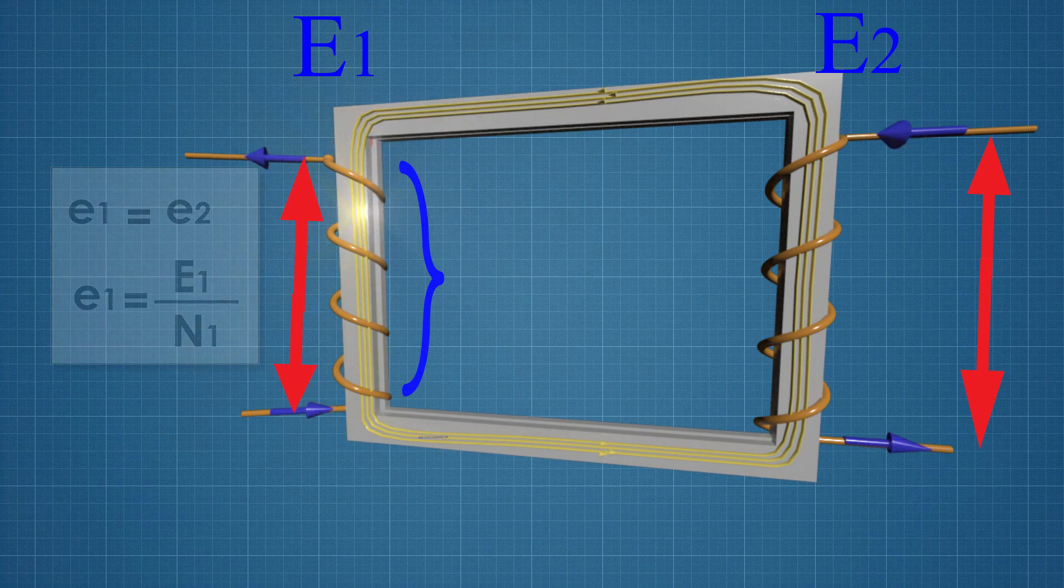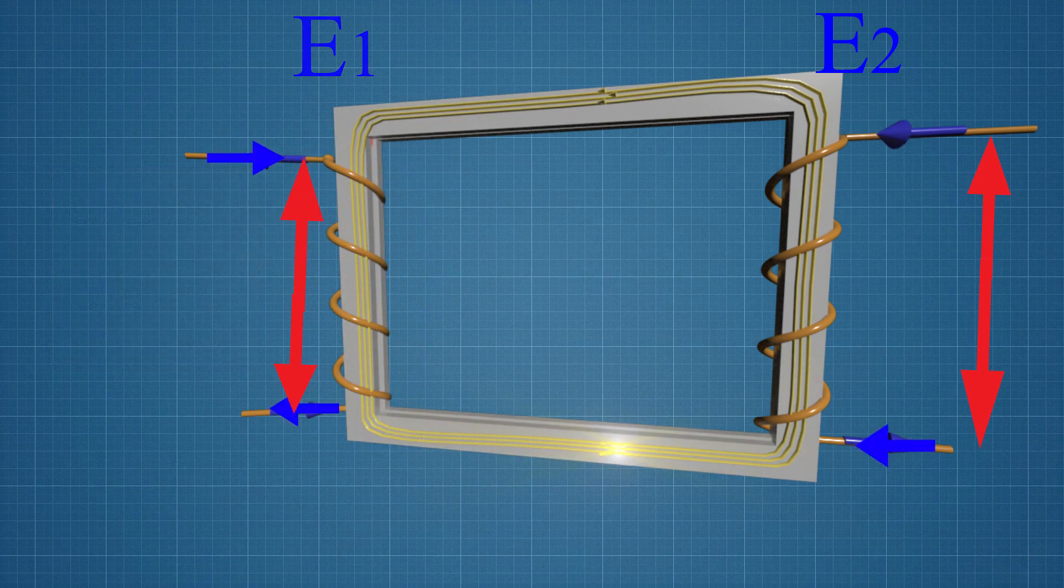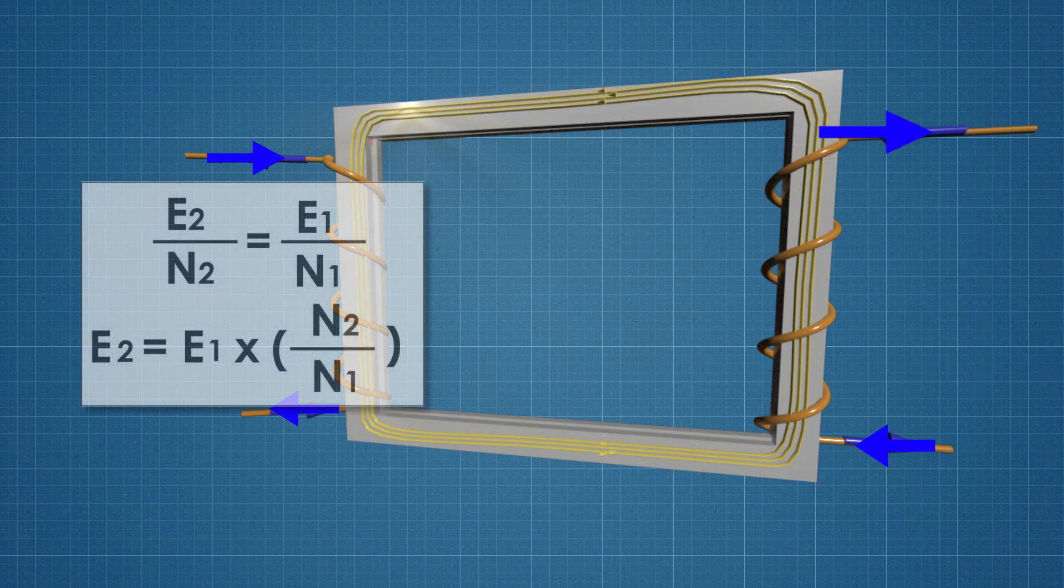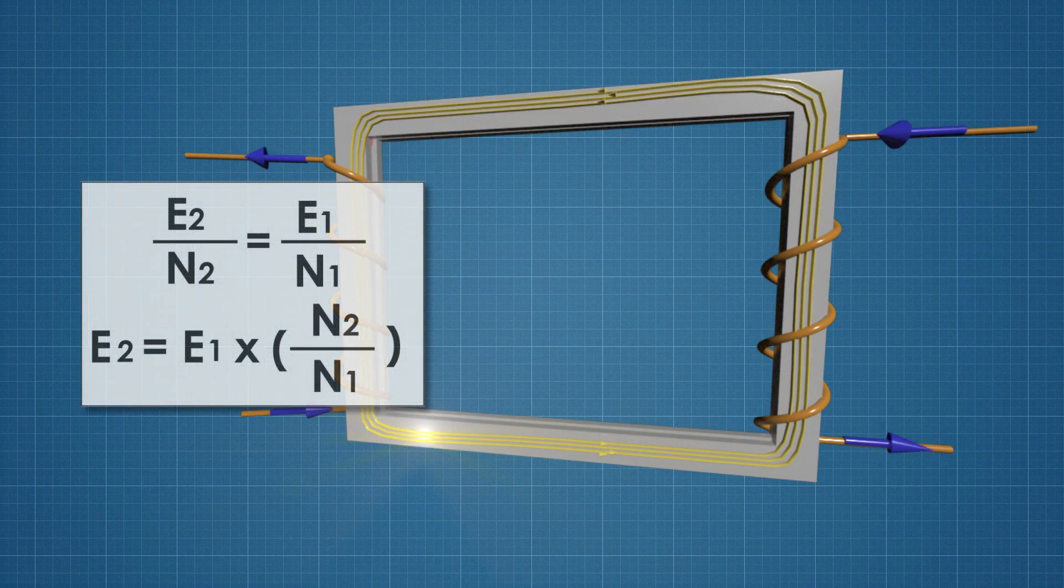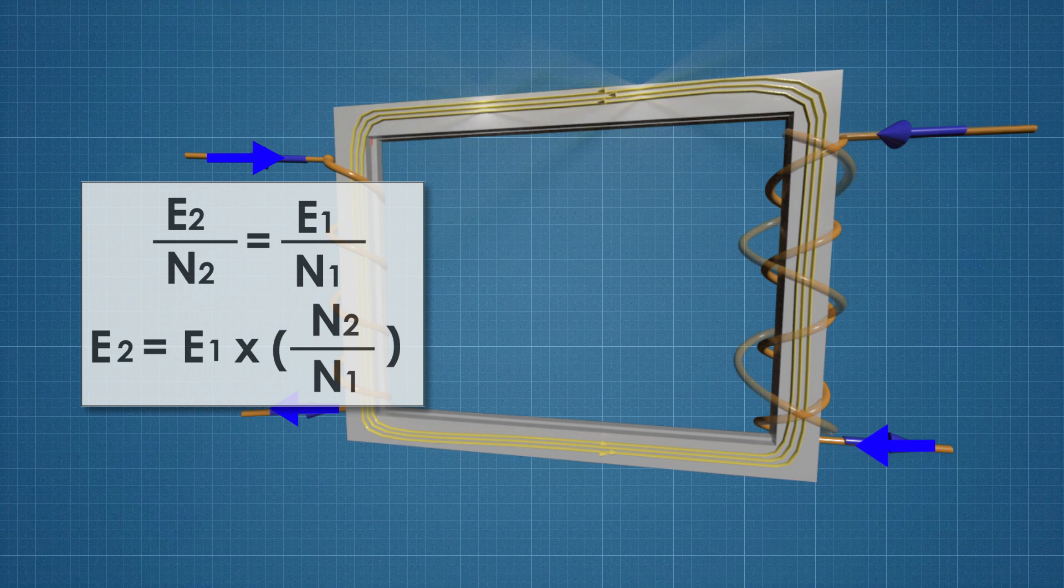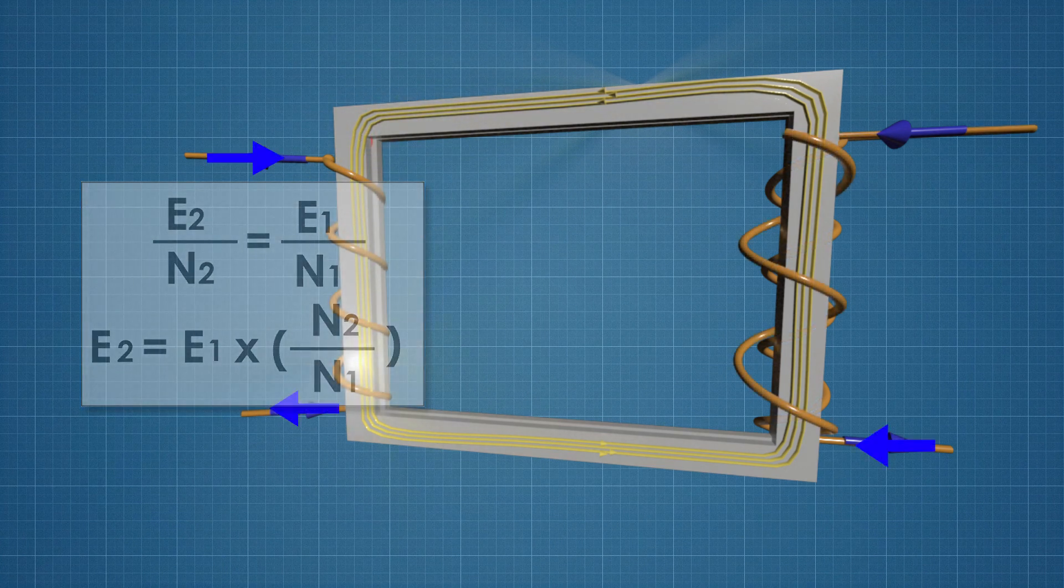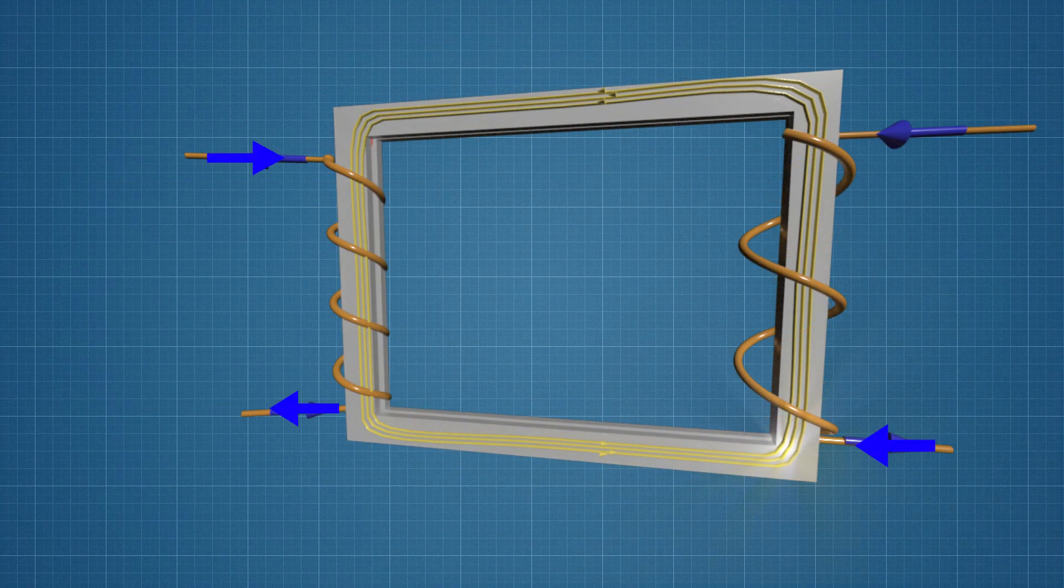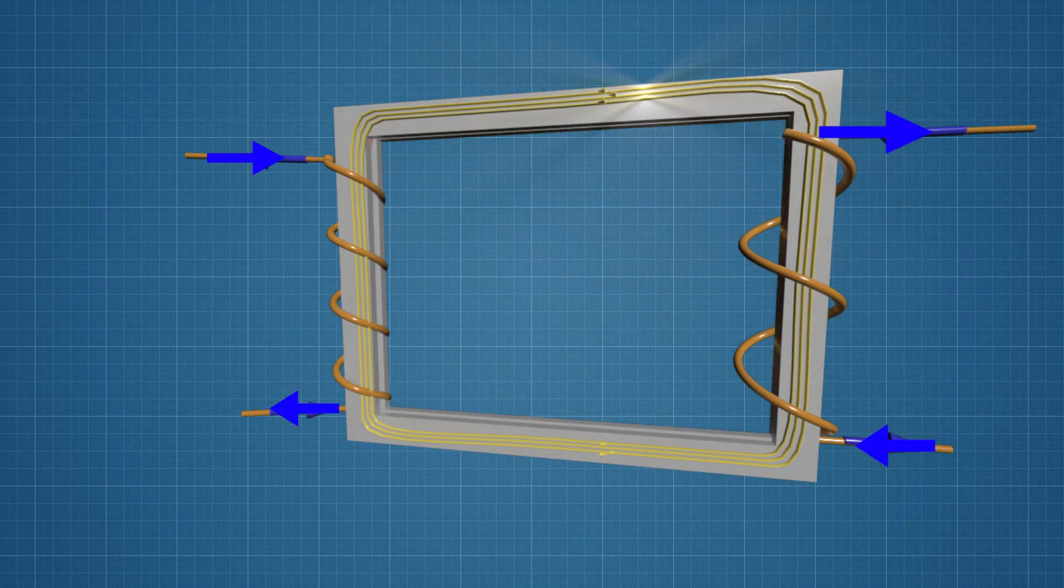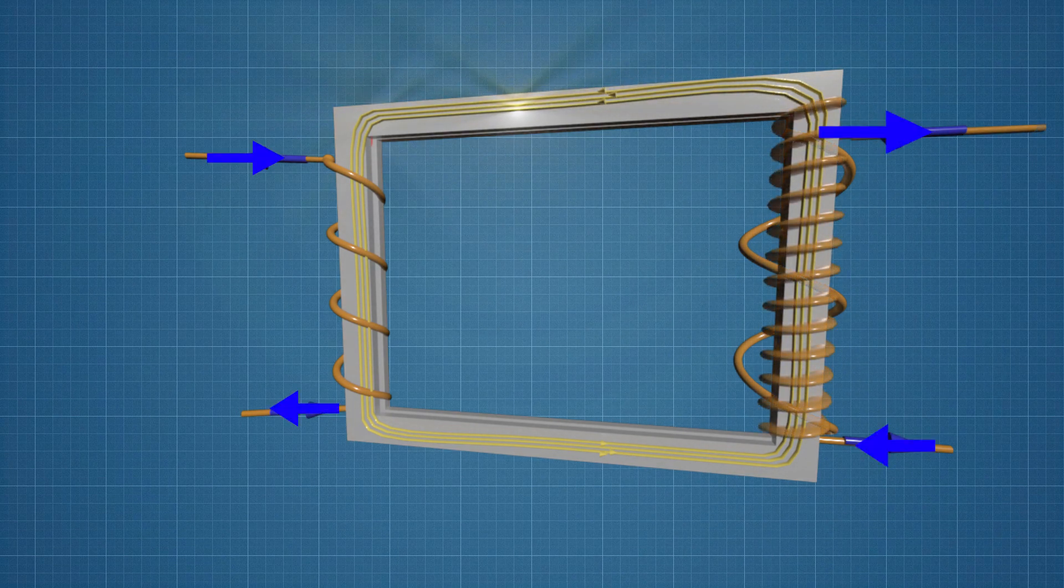Since the left-hand members of the equations are equal, we can equate the right-hand members: E2/N2 = E1/N1. Expressing E2, we obtain: E2 = E1 × (N2/N1). Thus, if we reduce the number of secondary winding turns N2, this will decrease the output voltage. When the number of secondary winding turns is increased, the output voltage will increase.